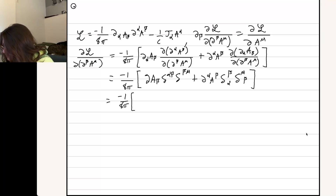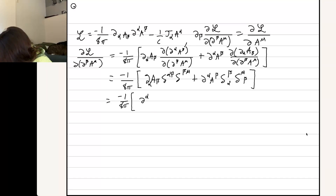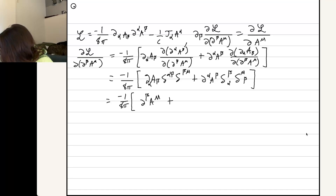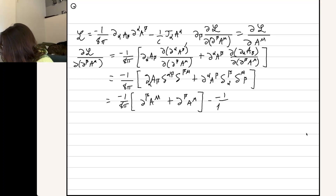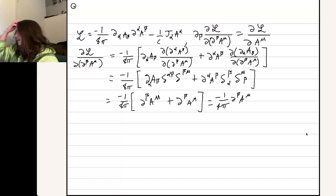Let's apply those Kronecker deltas to the derivatives. That's going to turn into del_beta A_mu — whoops, del_beta A_mu — plus del_beta A_mu as well. So in total it's minus 1 over 4 pi, del_beta A_mu.